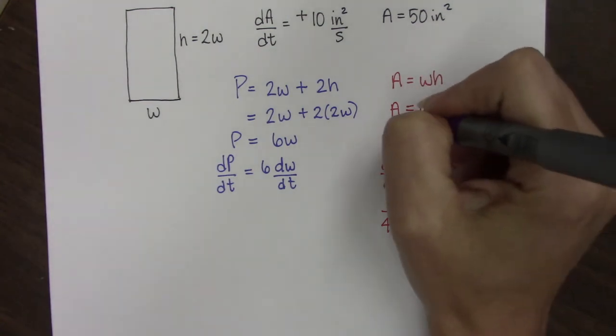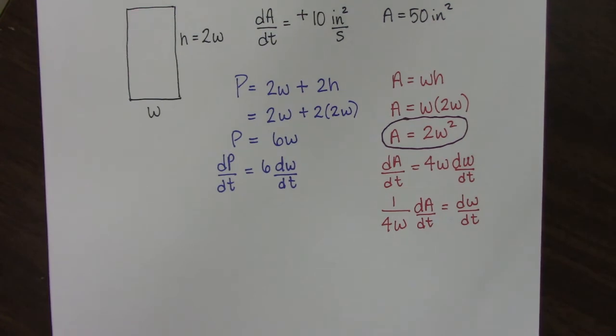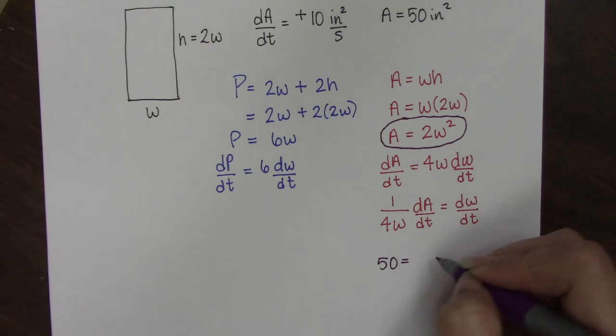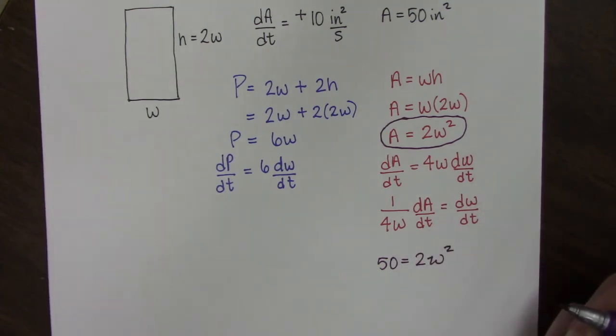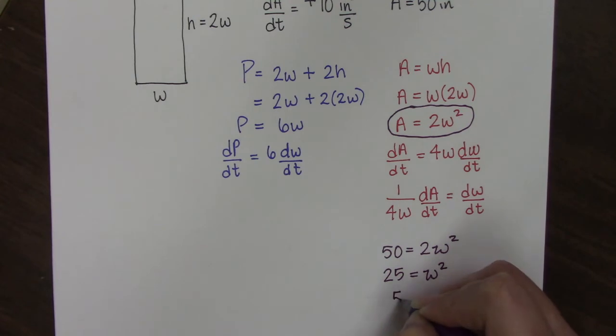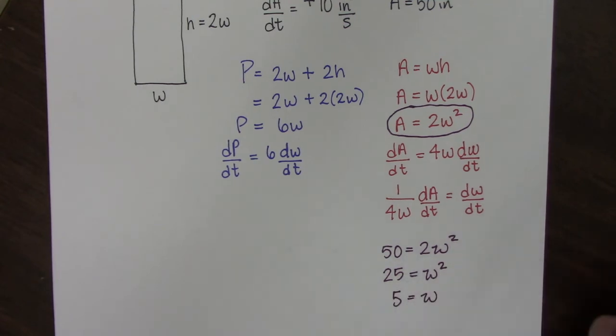So going back to this formula of only two variables, I know that at this specific moment in time, my area must equal 50. So now I can solve this equation to figure out what W was at that moment. So 2W squared equals 50, 25 equals W squared, and 5 equals W. So technically it should have been plus or minus 5, but for obvious reasons, I think we all agree that negative 5 is not appropriate because this is a width.